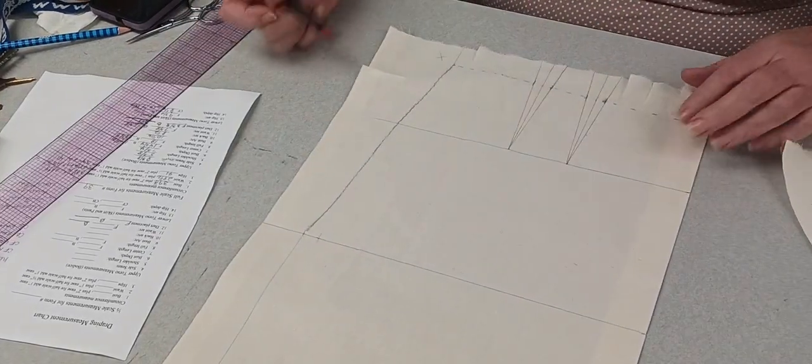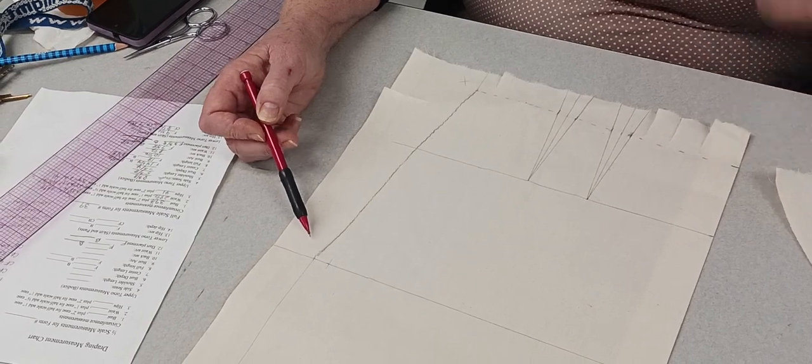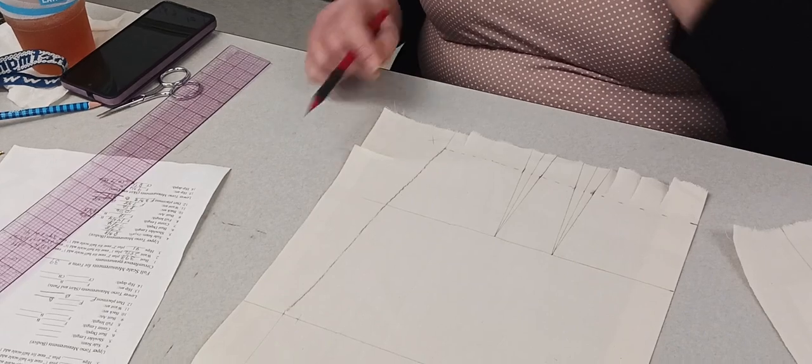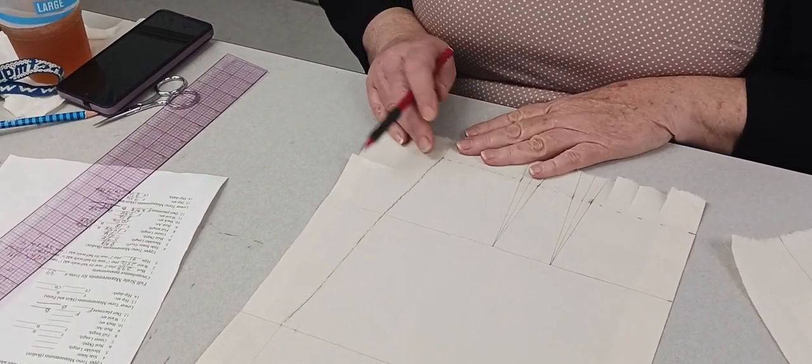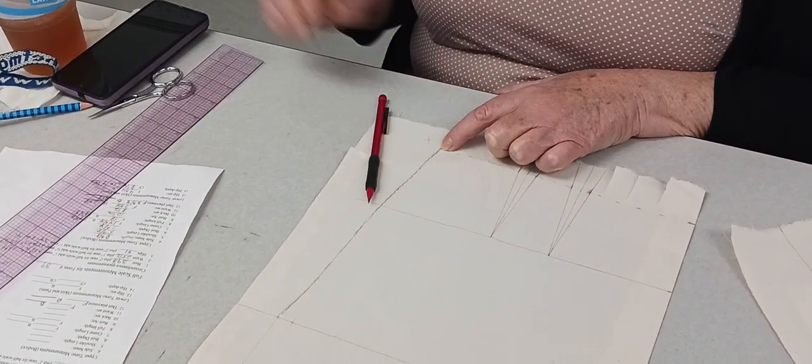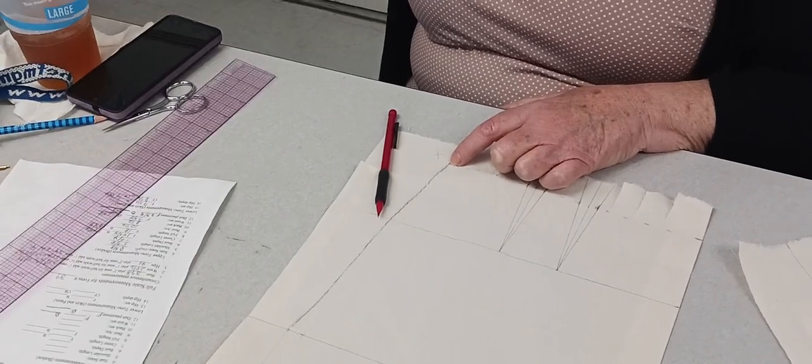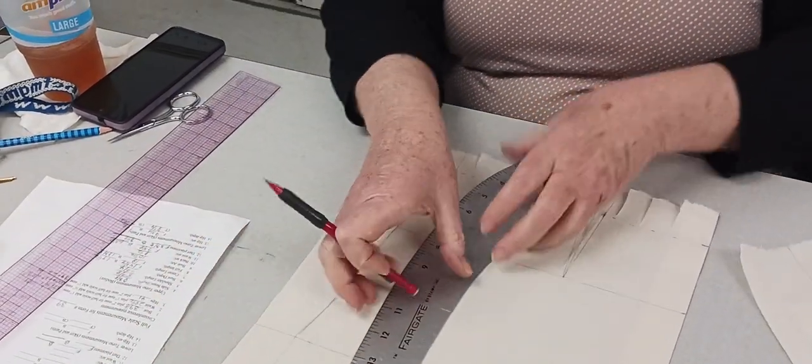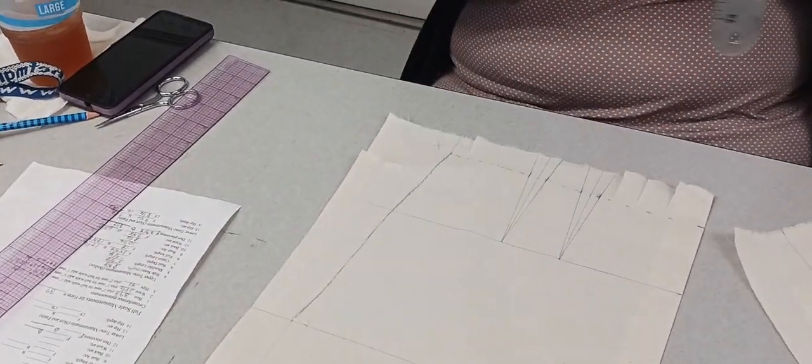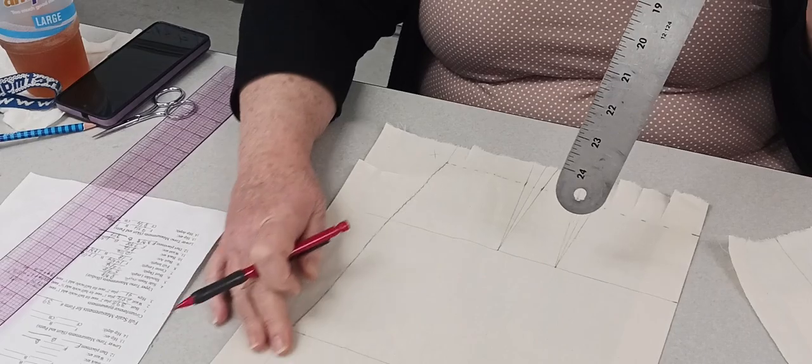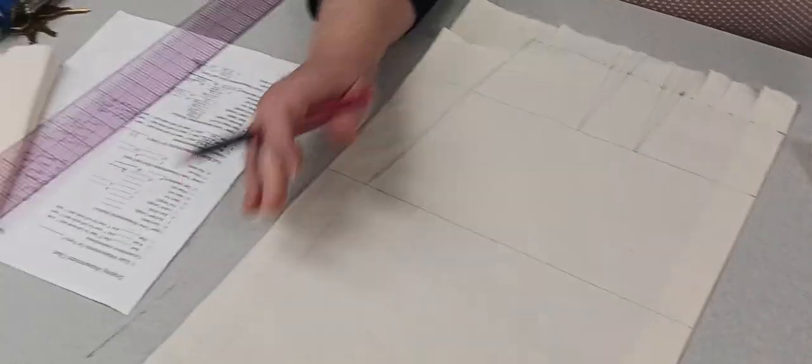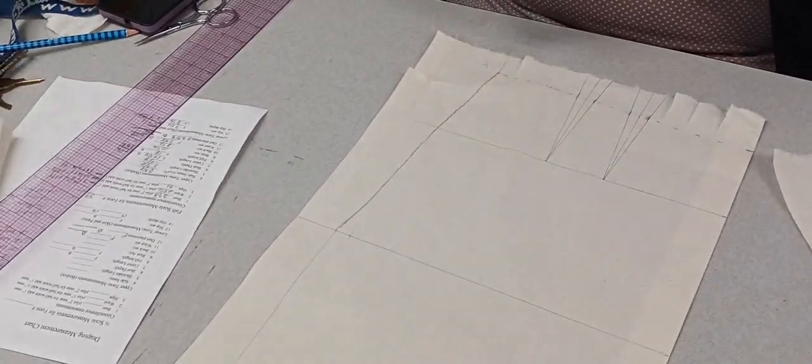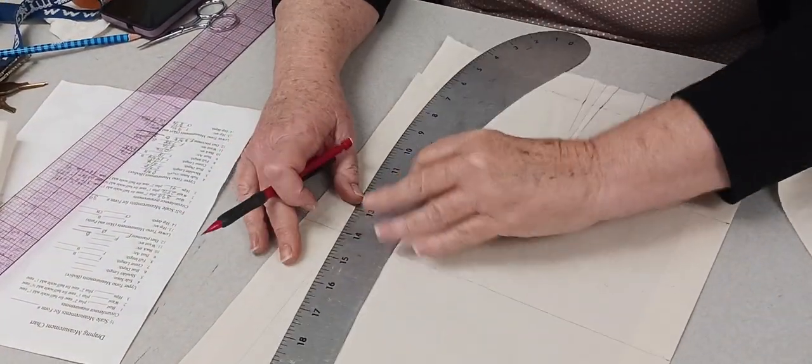Now you're gonna notice the side seam - do you see how it looks wobbly? No way am I using that. I've got a good waist arc now, so what I'm going to do is take my hip curve, this one, and I'm going to place it. Now I want the straight part of the ruler to line up somewhat with the straight part below the hip, because I don't want to go like this and have a point there. I want it to be a nice smooth transition.